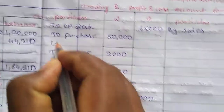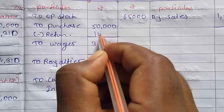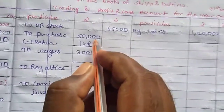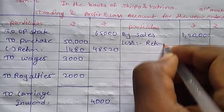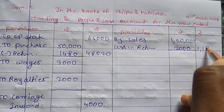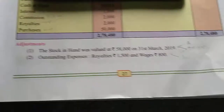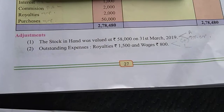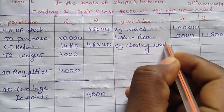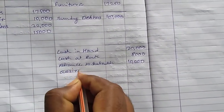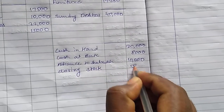Let's go to the adjustments. First adjustment — first of all write purchases: less purchase return — how much? Rs. 1,480 — so it becomes Rs. 48,520. Then sales: less return — how much? Rs. 2,000 — then becomes Rs. 1,18,000. First adjustment given: the stock in hand was valued at Rs. 58,000 on 31st March 2019. First: by closing stock — Rs. 58,000. Second effect: assets — closing stock Rs. 58,000.